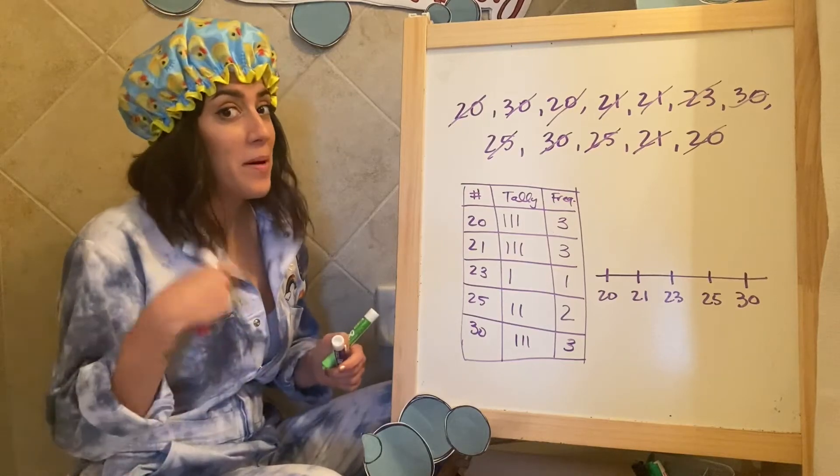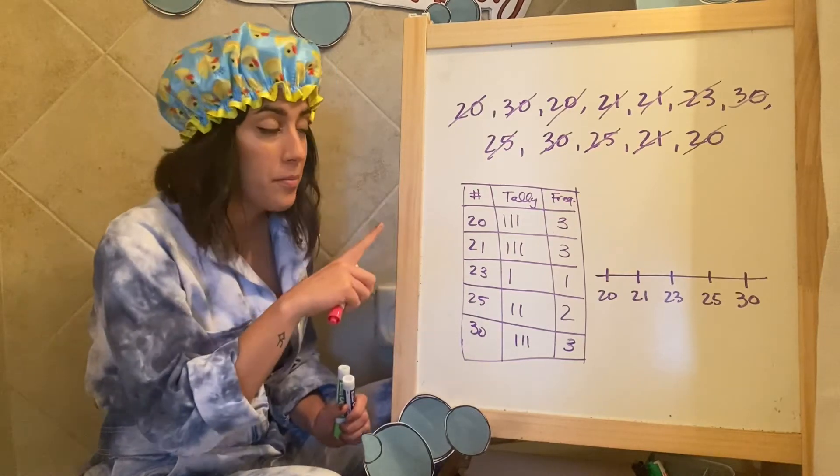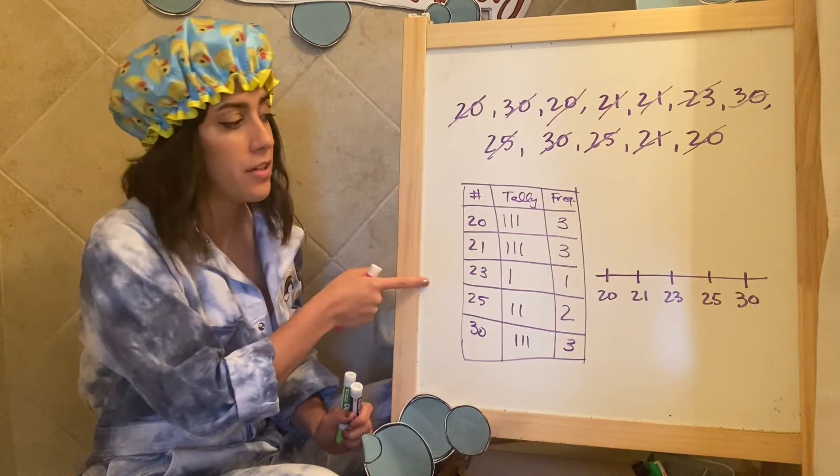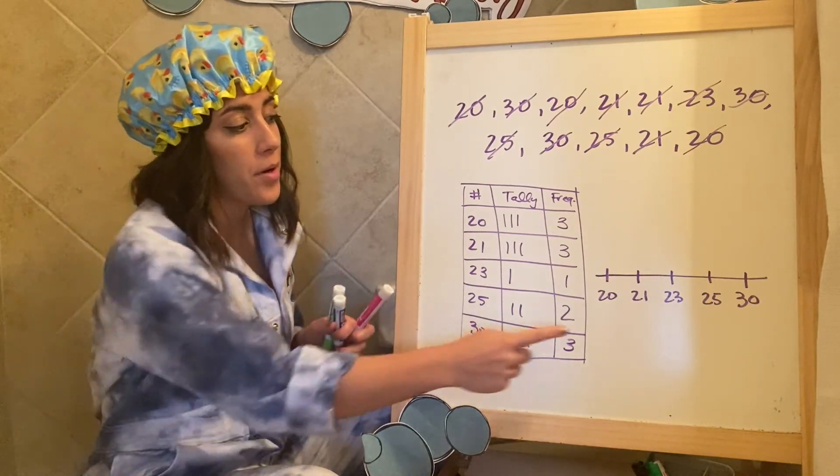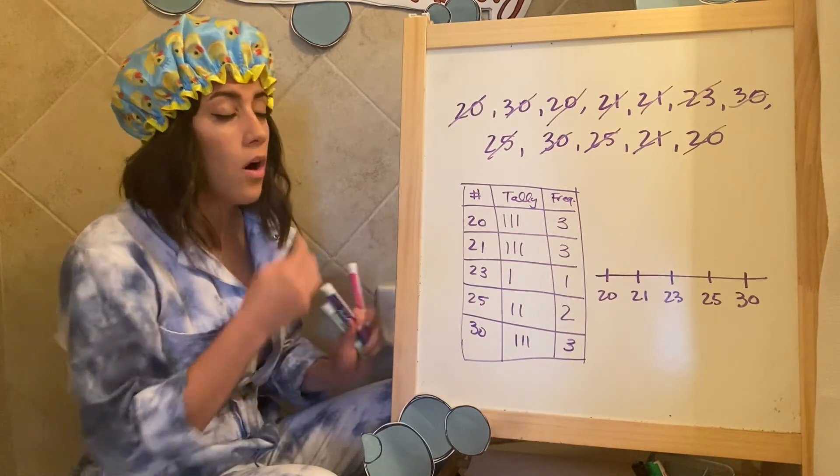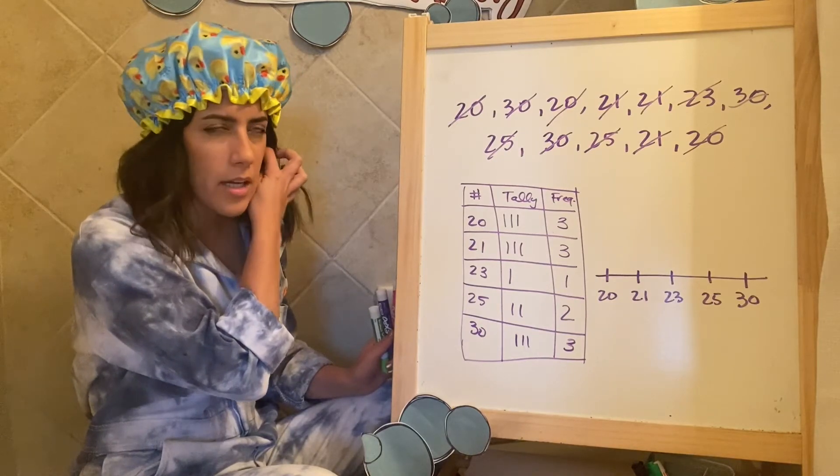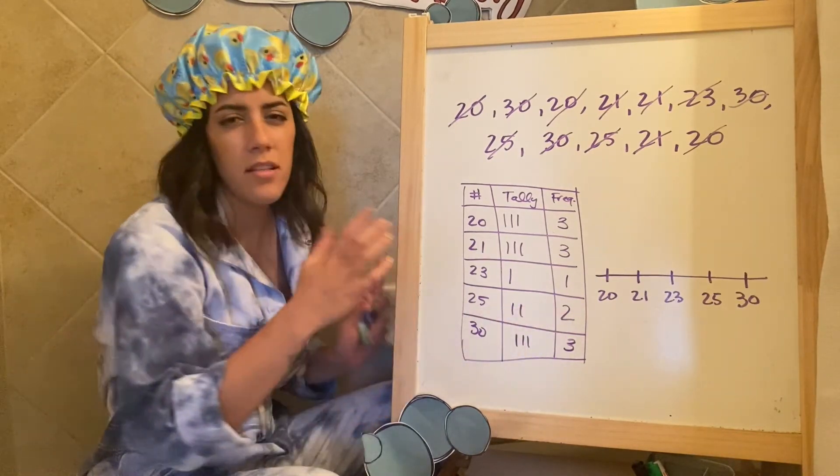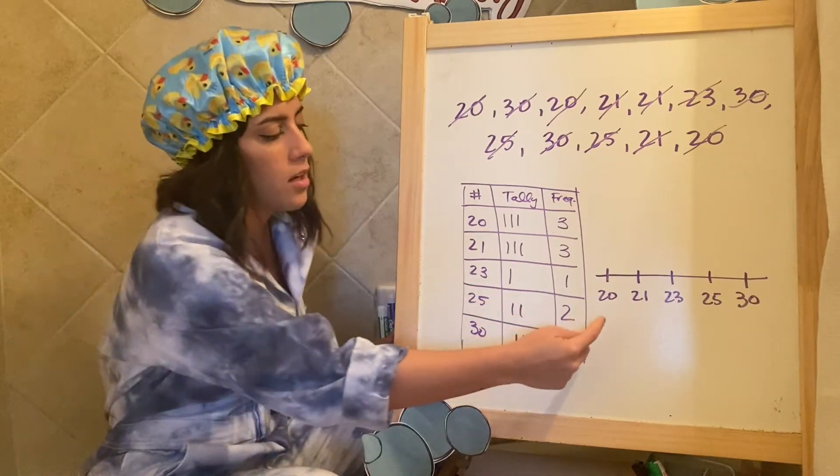Okay. So now knowing what we know about dot plots, I came back to this example. We had made a frequency chart earlier in this video. And now we're going to make a dot plot next to it. So all I did was create almost like a number line. It is a number line.